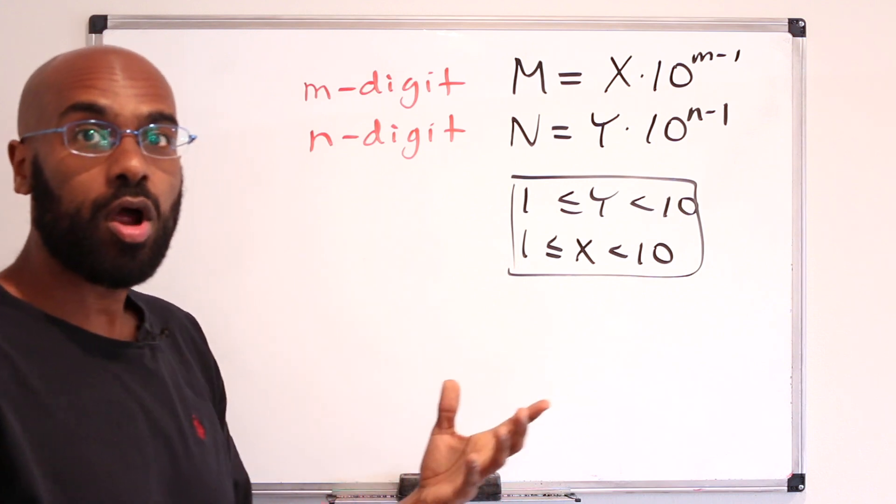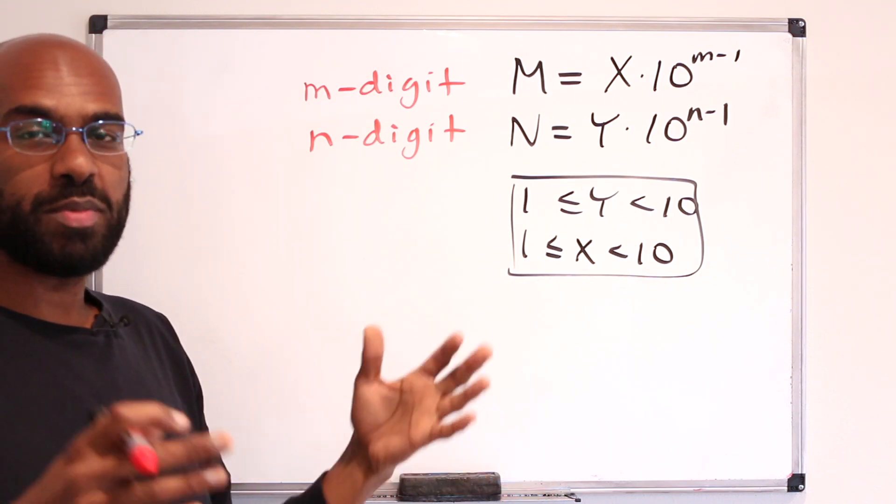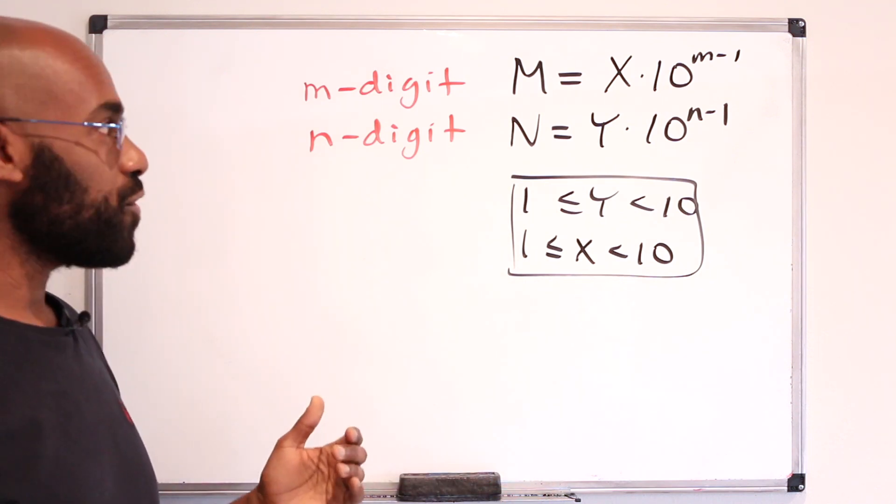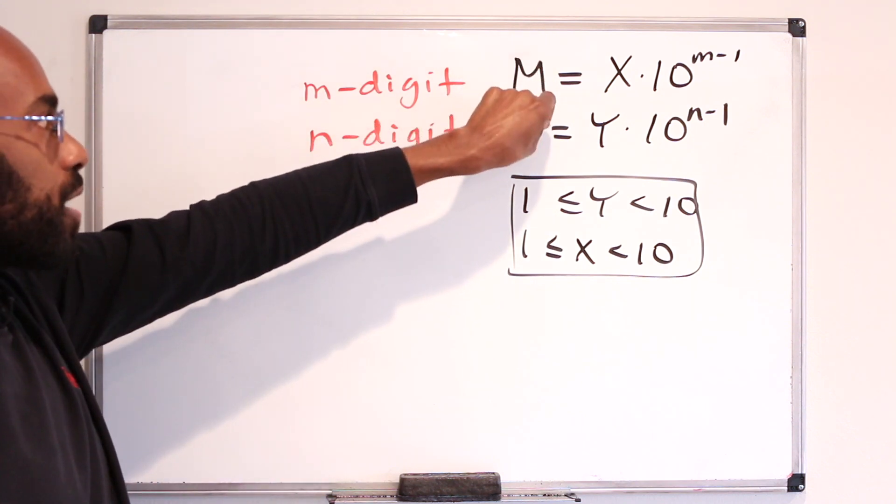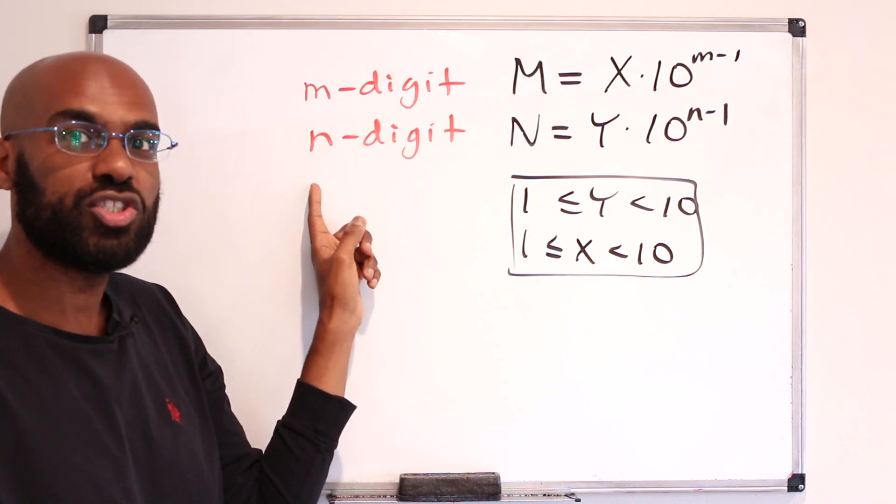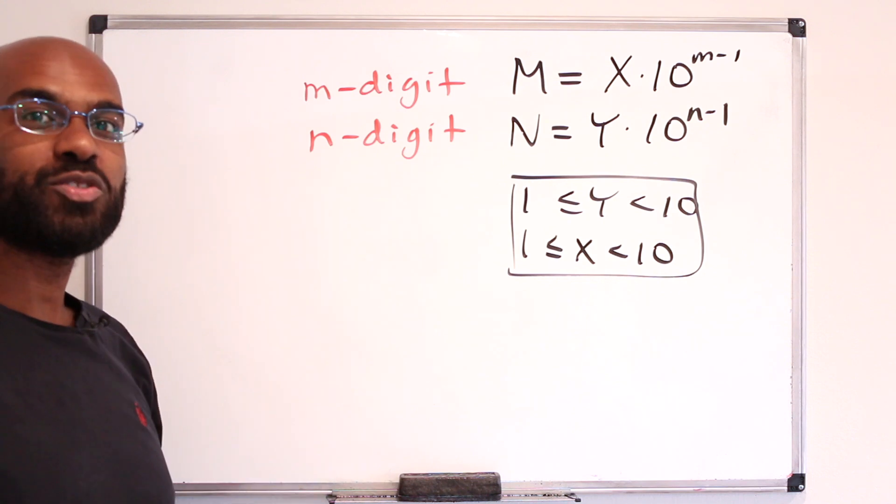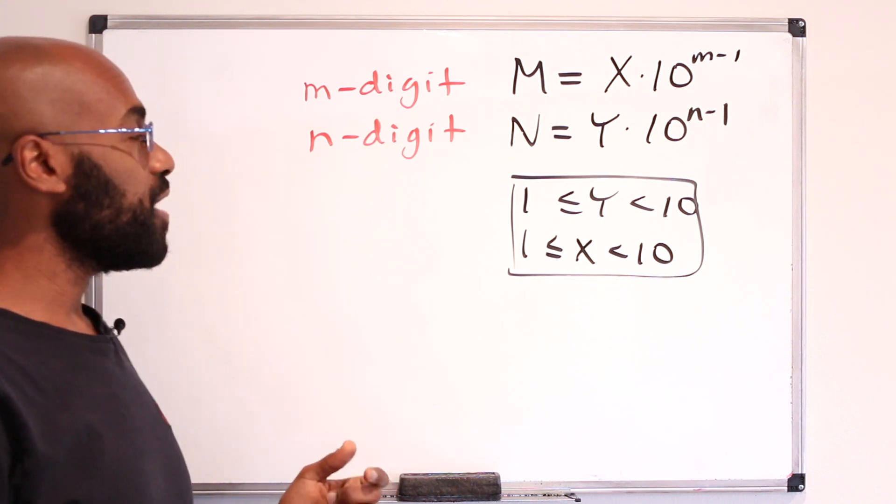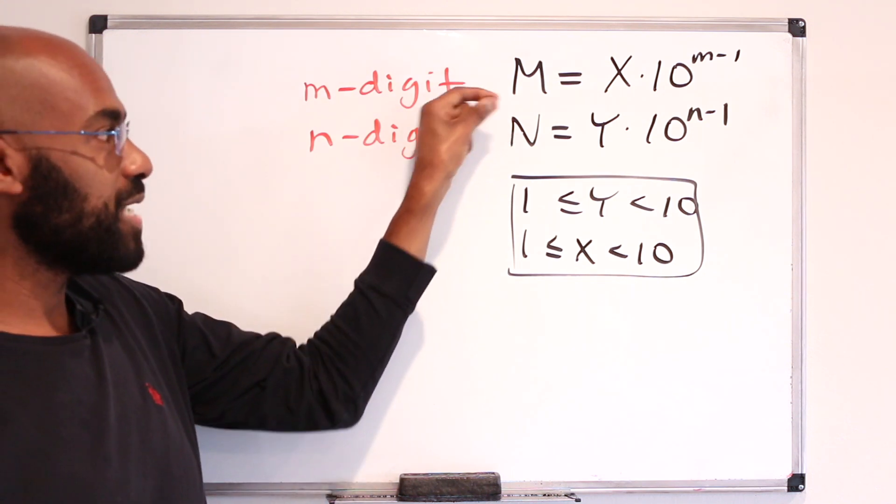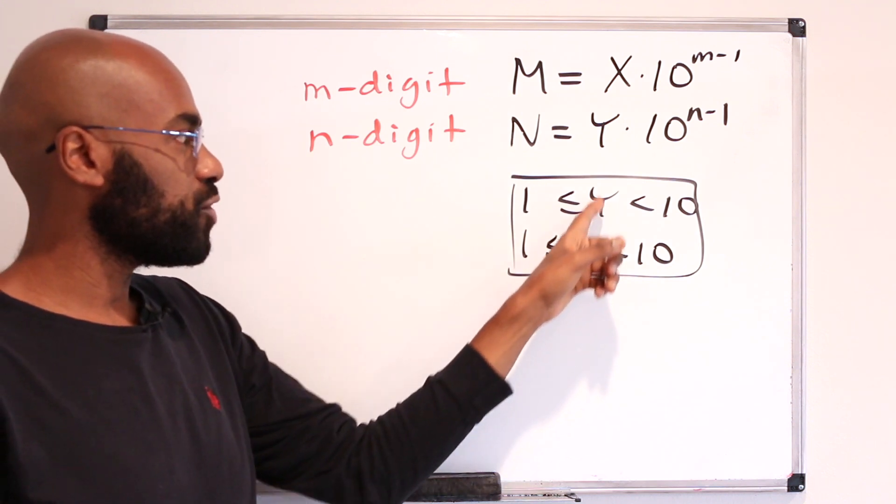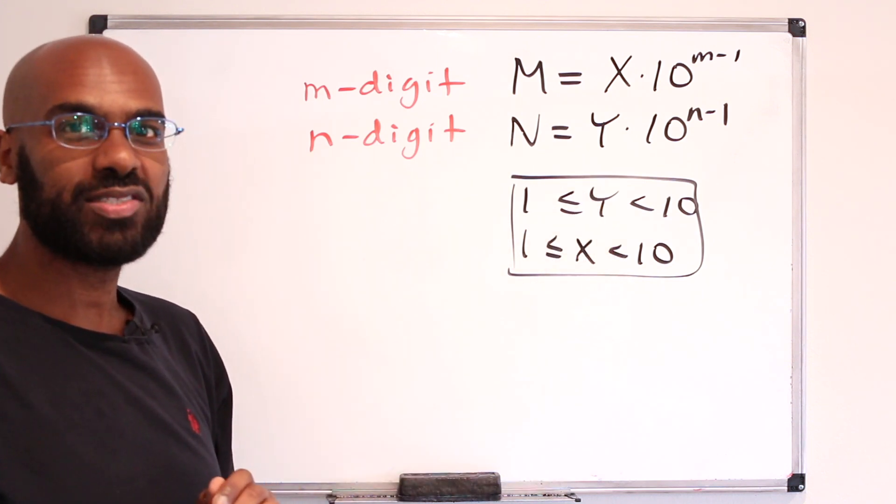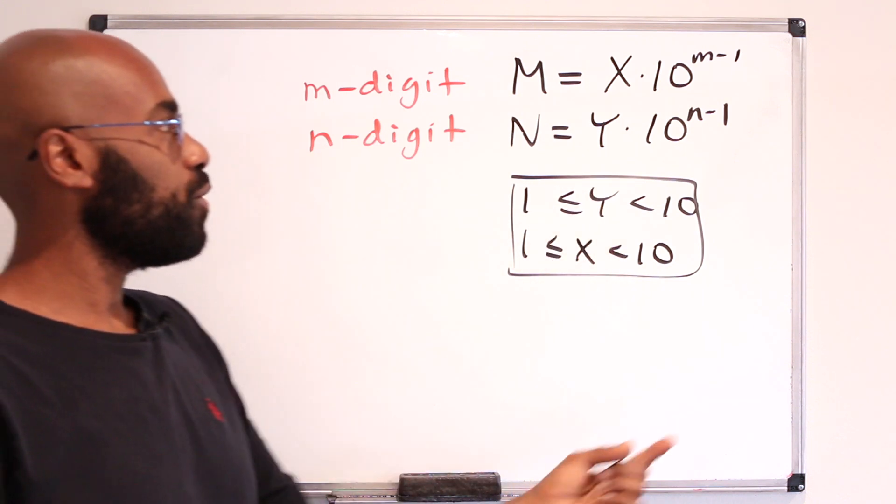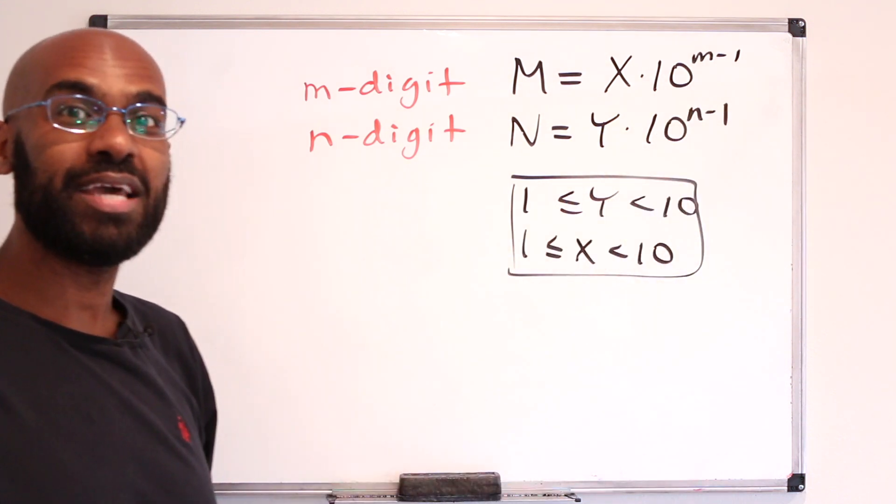Now the question I have for you is as m and n get very large, so we have large numbers with many digits, what's the behavior of the fraction of the numbers m and n where the product is m plus n digit versus m plus n minus 1 digit? As a hint, think about what the number of digits of m times n is in terms of restrictions on x and y themselves, and then use that to understand what happens when little m and little n get very large.